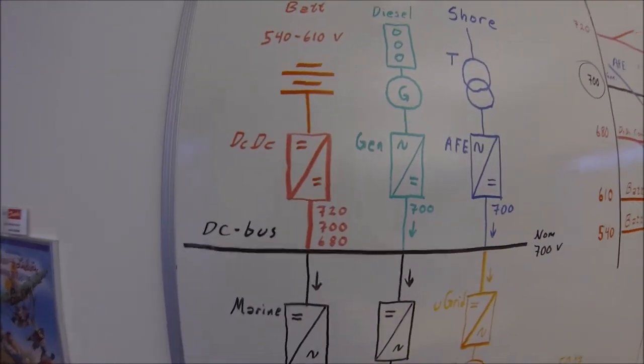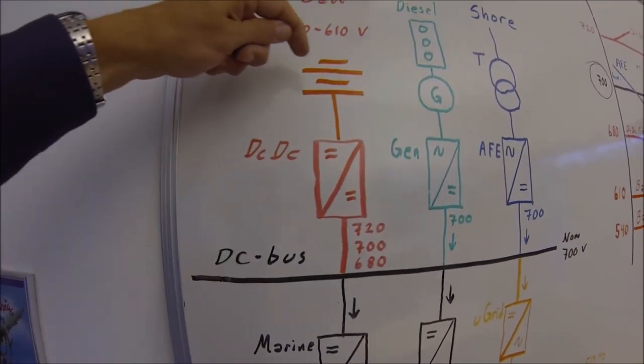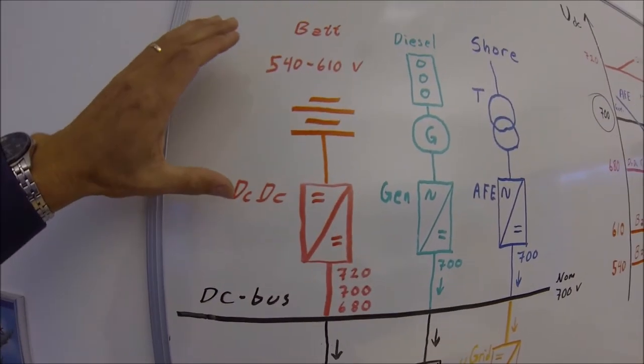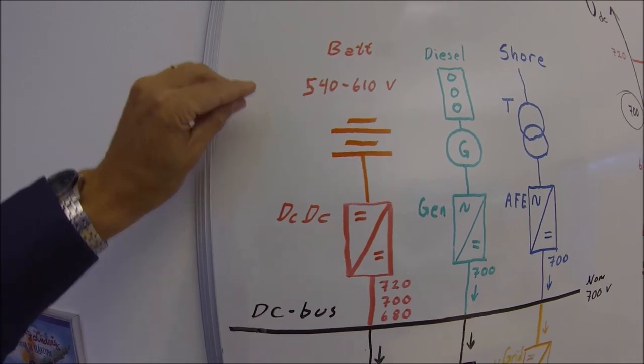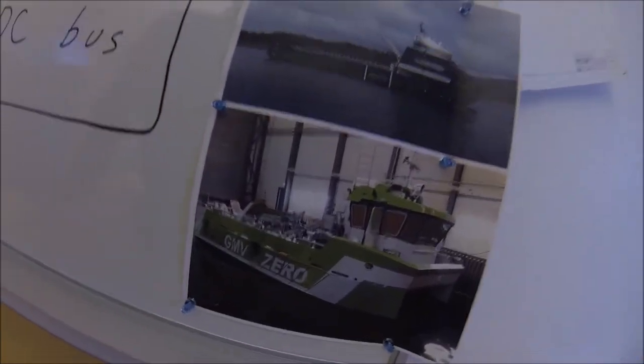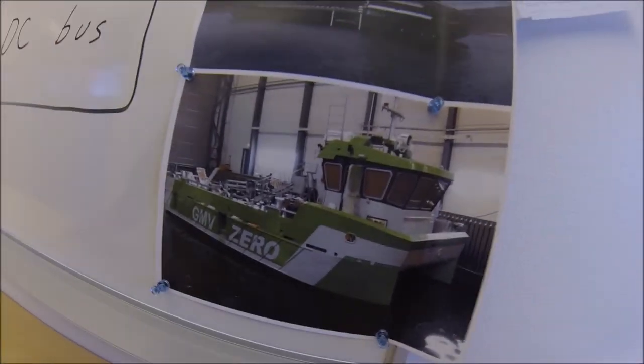One of the advantages with this is that you have almost no losses when you are running without modulation. So this can be used in a way for a long range, very economical propulsion unit. You will see it in some of the clean, pure, battery boats that they run with a closed DC converter in some cases.